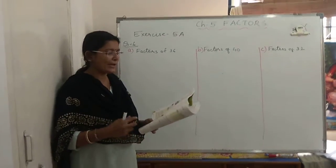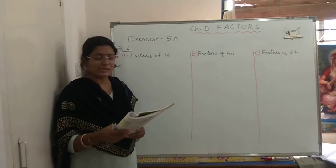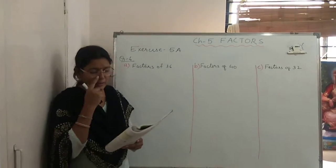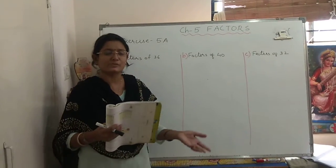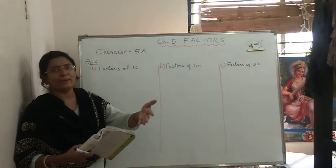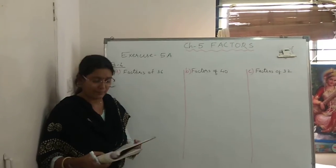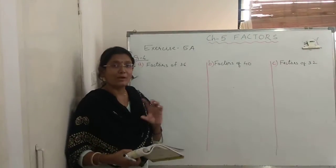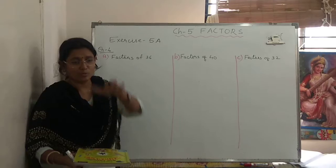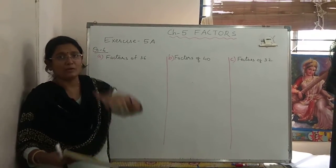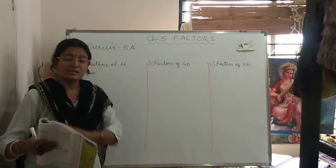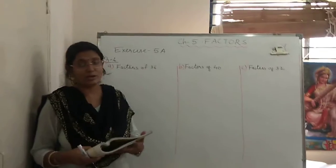Number 1: A bookshop helper has to keep 36 books in equal piles. What are the different piles of equal number of books that he can make? See, here the bookshop helper, when you are going to purchase books in a shop, one person is sitting on the counter and the other person is helping him to take out the books. He is called bookshop helper. He has to keep 36 books in equal piles. Piles means what? When you are keeping one book, then on that other book, third book, fourth book, like that you are making one pile.